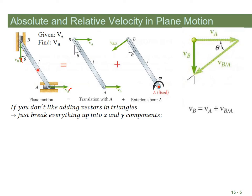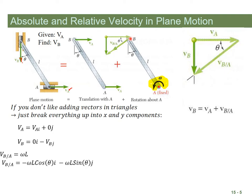Another way to add those vectors is by breaking everything into i, j, k components. Velocity A is entirely in the i direction, 0j. B is sliding down the wall, so it's in the negative j direction. We also need to break up this rotational velocity, V(B/A), into i and j components. If it's coming down and to the left — using SOHCAHTOA — cosine gives the i component and sine theta gives the j component. Remember, V equals r omega, and you're just breaking that into i and j components.